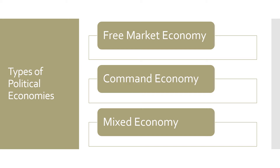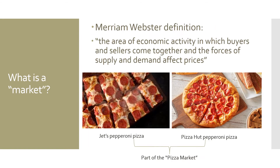What underlies those three different types of economies is a different political approach to markets within the state. In order to understand this, you have to understand what an economist means by a market. According to Merriam-Webster, a market is an area of economic activity in which buyers and sellers come together and the forces of supply and demand affect prices.